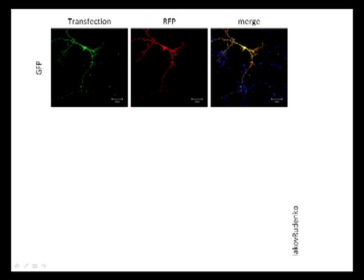The other system we use a lot is primary neurons — primary cortical neurons from the mouse, as used in the Abelievich paper. We transfect these transiently with calcium phosphate. In this particular example, I'm going to show an interacting protein of LRRK2, which is a co-chaperone called BAC5. We co-transfected the gene of interest with red fluorescent protein, and the merge on the right shows in yellow an individual neuron that's co-transfected with both markers.